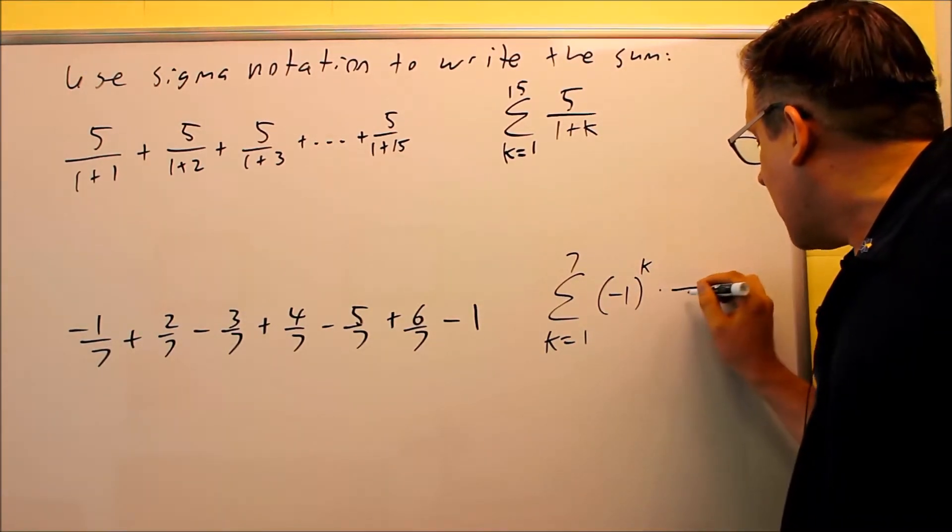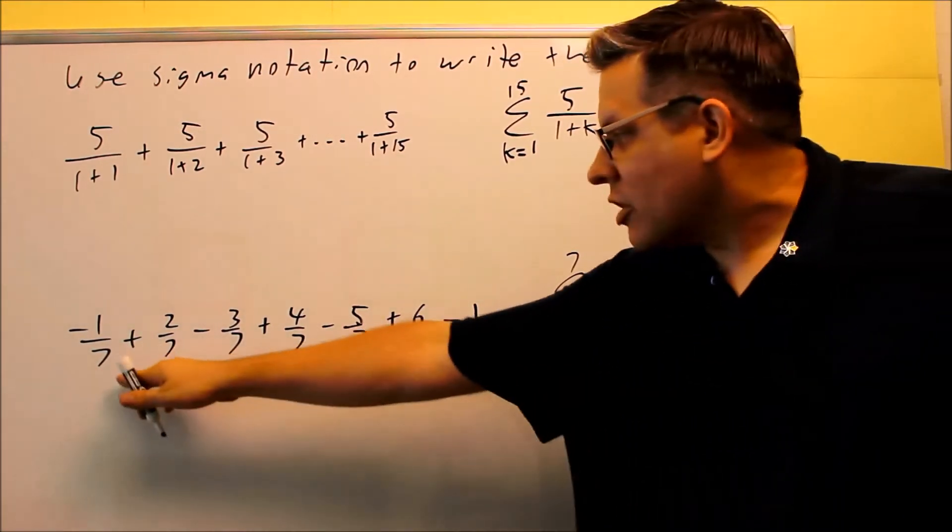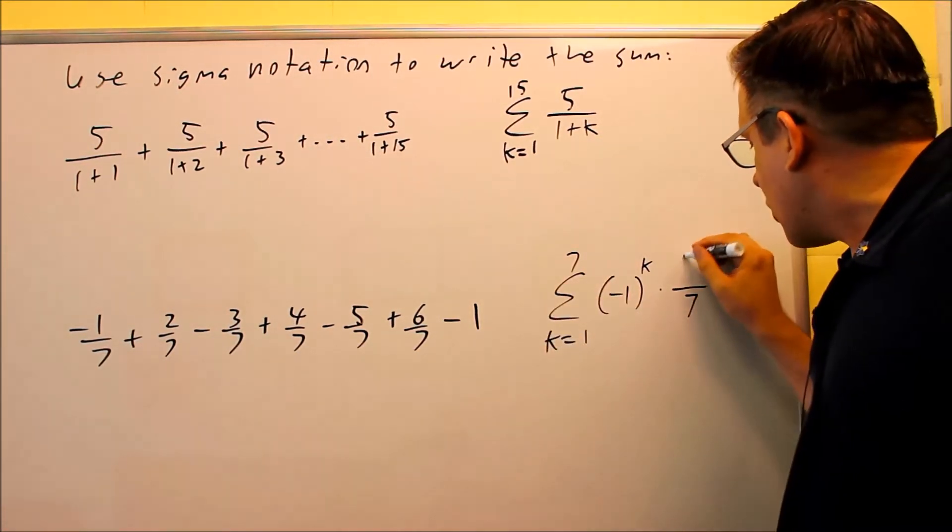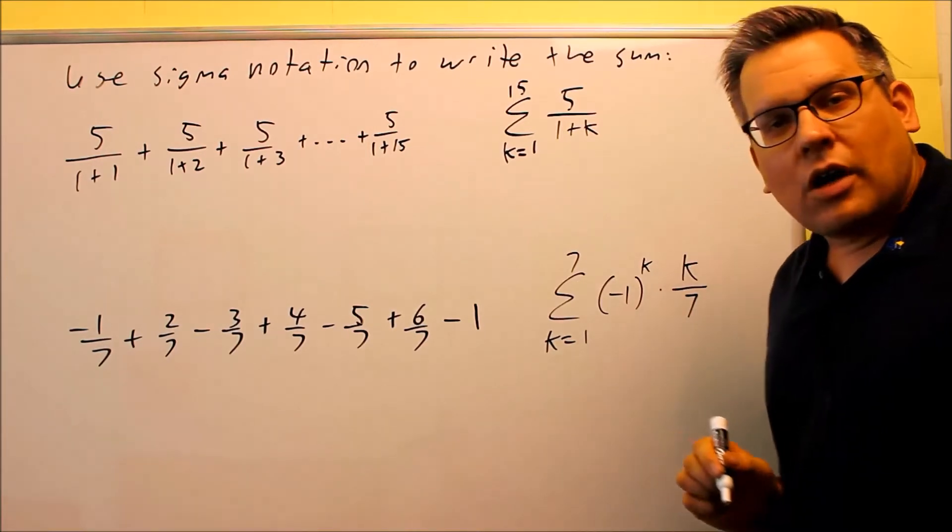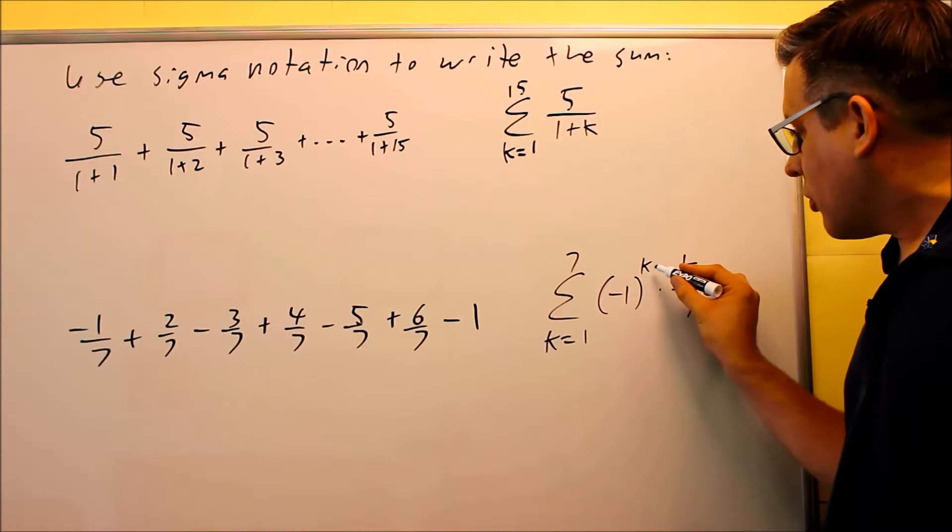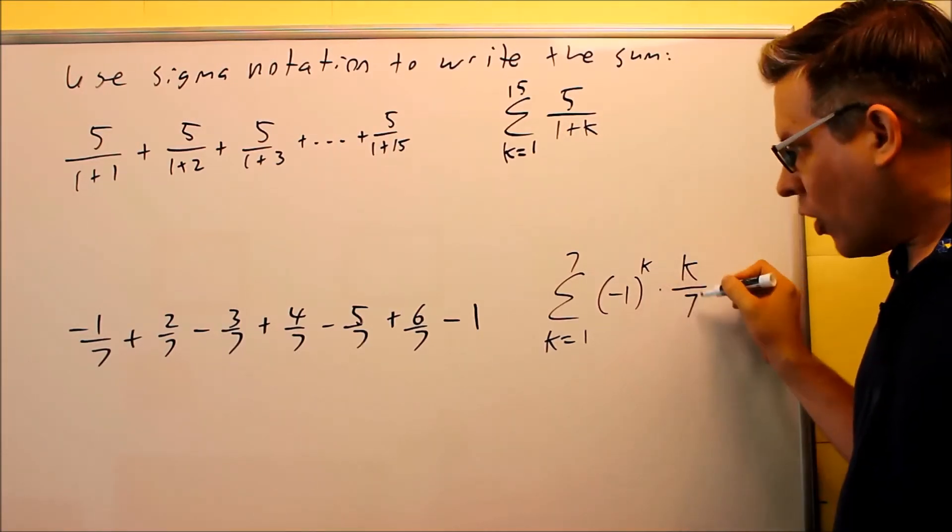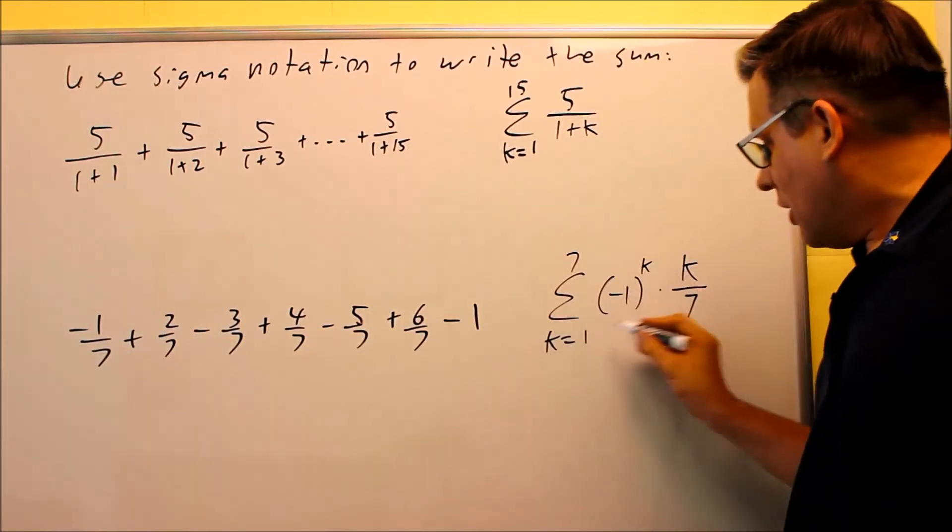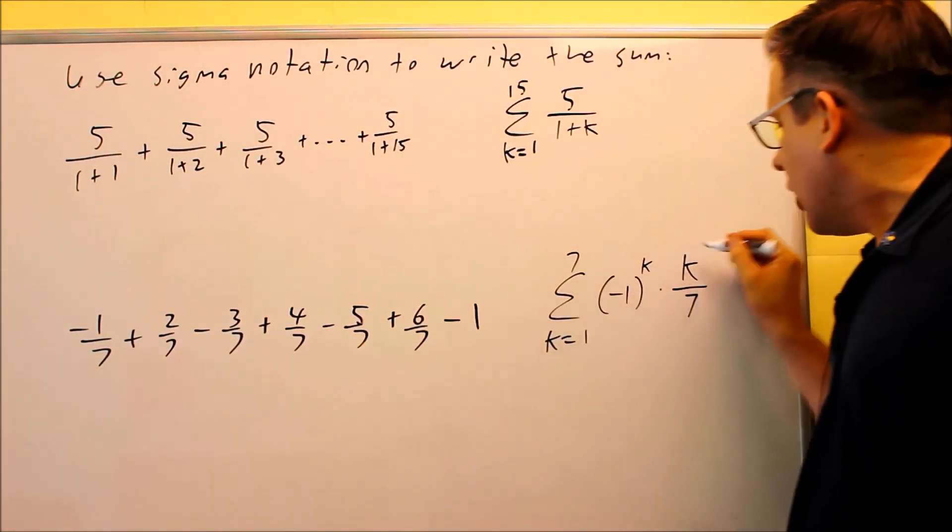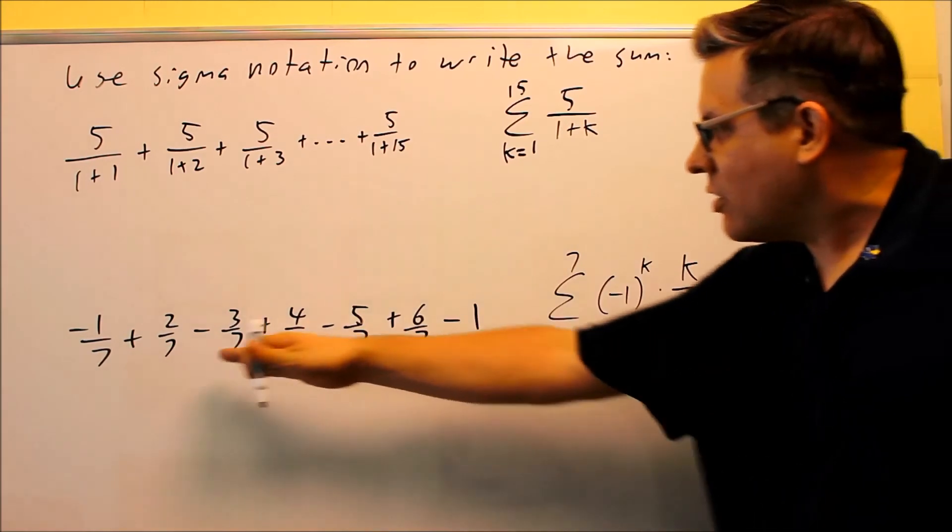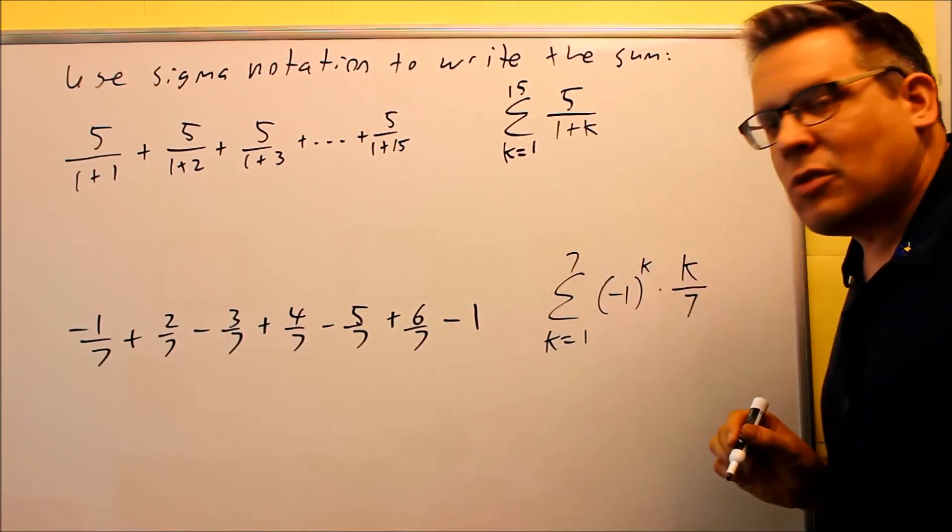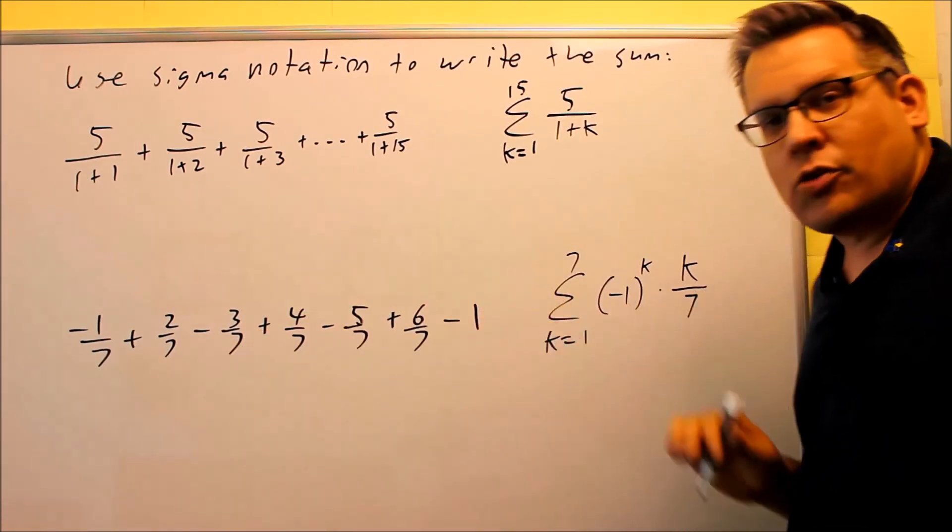Then I have on the bottom, a 7 is always going to be the same all the way through. Again, this one can be written as 7 over 7, and then I'm just going to put my k value on top there, and that will take care of it. If I put a 1 in here for the first one, I get negative 1 seventh, which is what I have. Make k equal 2, negative 1 squared is positive, so that would be a plus there, and then there would be a 2 sevenths here, and that's going to continue all the way down to the very last term. So again, this would be the correct summation notation to generate the sum.